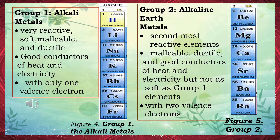Group 2 — Alkaline earth metals: second most reactive elements, malleable, ductile, and good conductors of heat and electricity, but not as soft as group 1. Elements with two valence electrons. Group 2 members: beryllium, magnesium, calcium, strontium, barium, and radium.